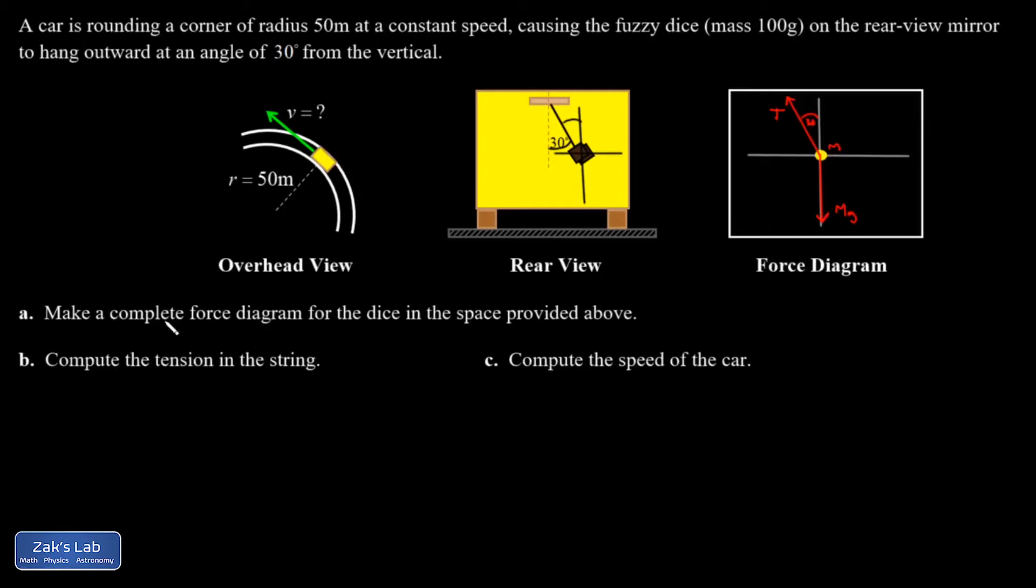Part B asks us to get the tension in the string. And the easiest way to do this is with a vertical analysis. So it's the vertical component of that tension T that's holding us up against gravity. And there is no vertical acceleration. It's just a balance of the vertical forces. So if I want to be somewhat formal about it, the sum of all the forces in the y direction must be equal to zero.